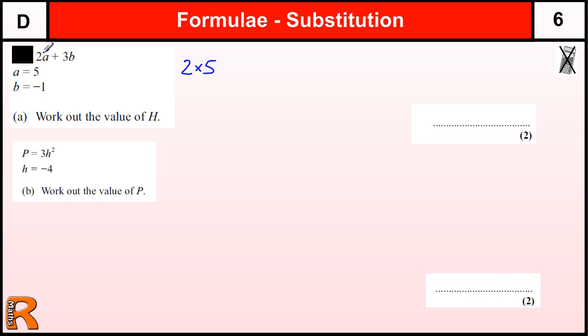If you imagine a to be a box that we can put numbers into, we've got 2 lots of a, so a is 5, we've got 2 lots of 5. Then we've got 3 lots of b, 3 lots of, remember that means times, negative 1. So 2 lots of 5 is 10, 3 lots of negative 1 is negative 3, and 10 added to negative 3 gives us 7. It's just like taking away 3.